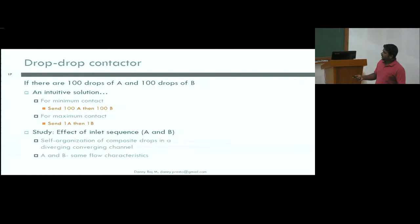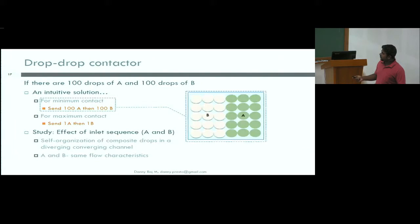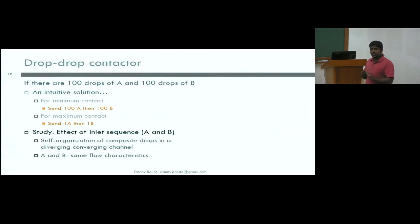Let's say you take 100 drops of A and 100 drops of B. The intuitive solution for minimum contact is simple. You simply send the A drops first, followed by B. So only at the intersection will there be any mass transfer. For maximum contact, you would intuitively suggest that you have to send a drop of A, followed by B, and so on, into the channel. Now, what we do in the study is understand whether this will give you what you're looking for. Will sending drops one after the other actually give you a good mix of drops inside the channel?